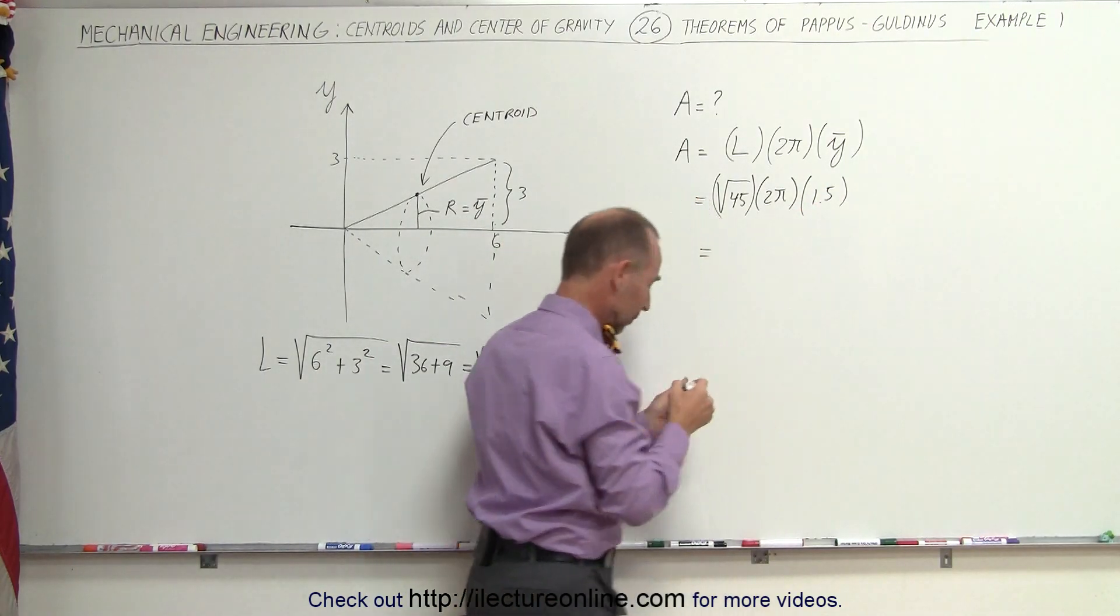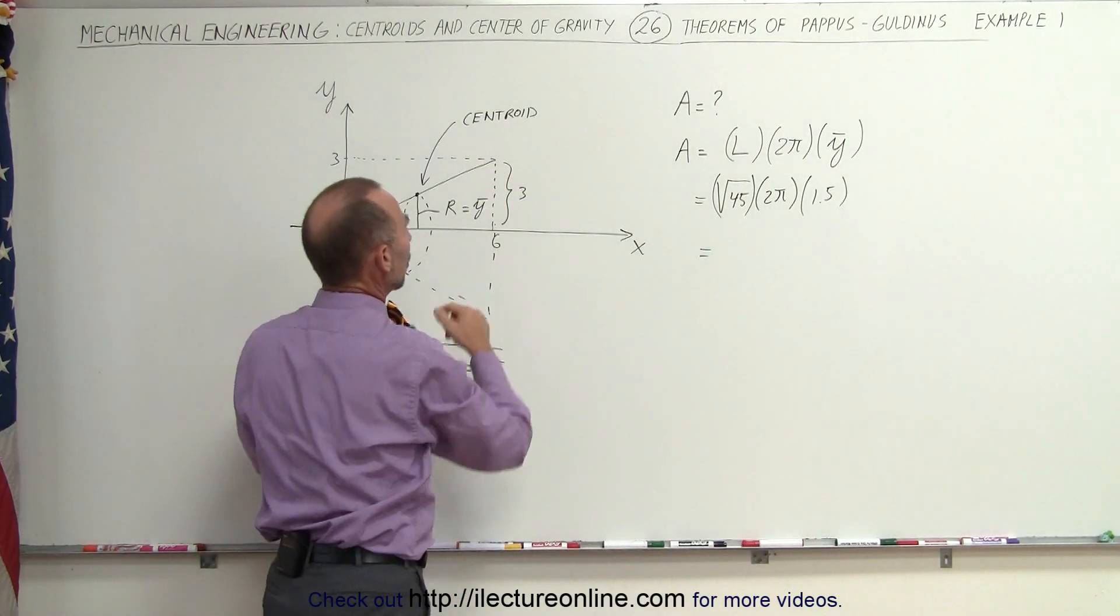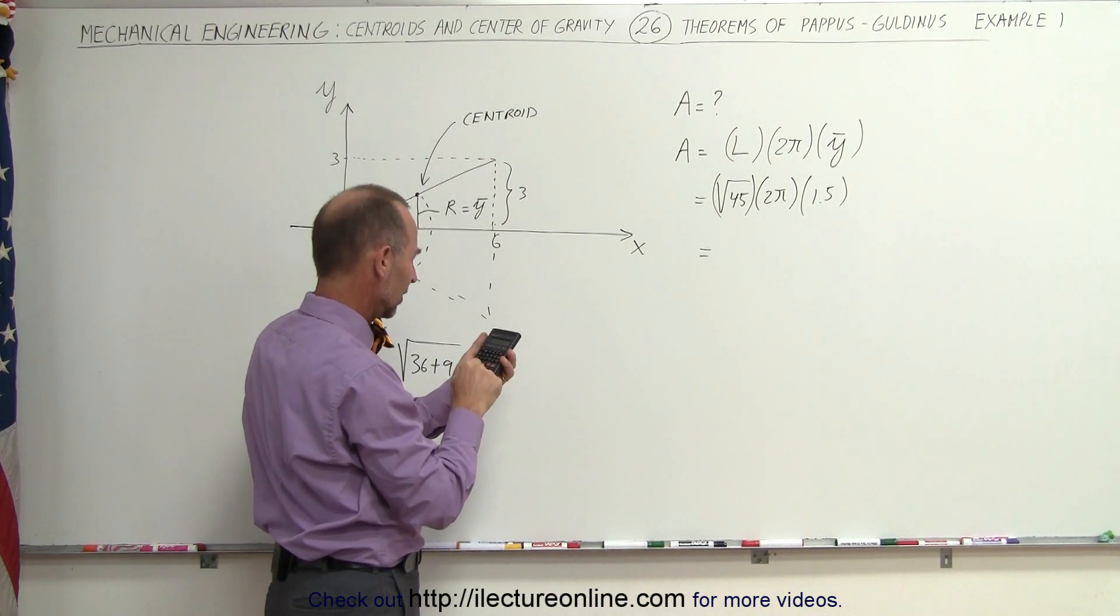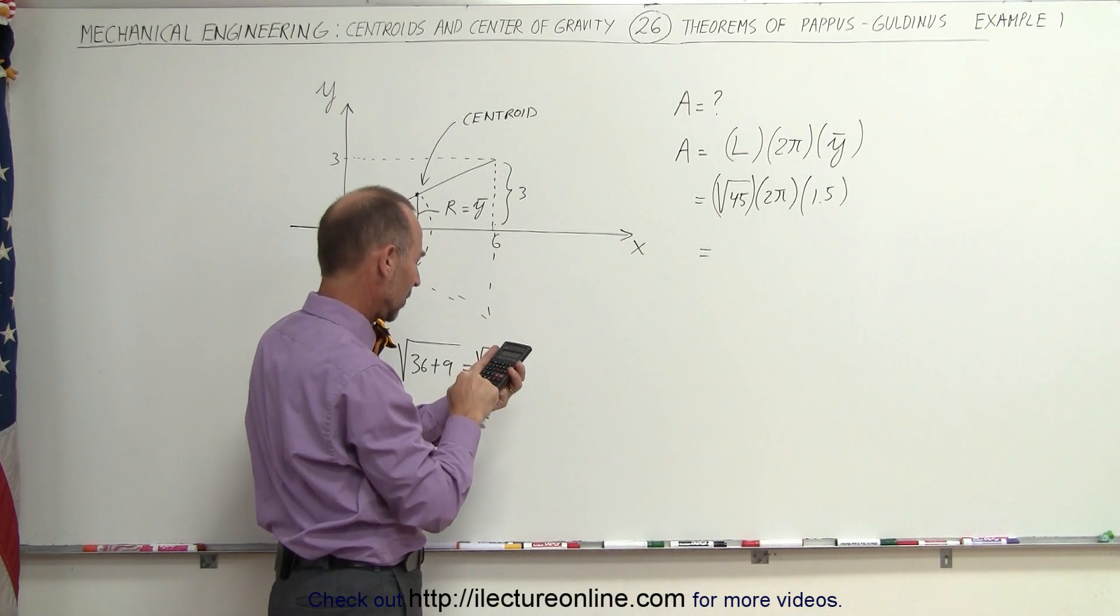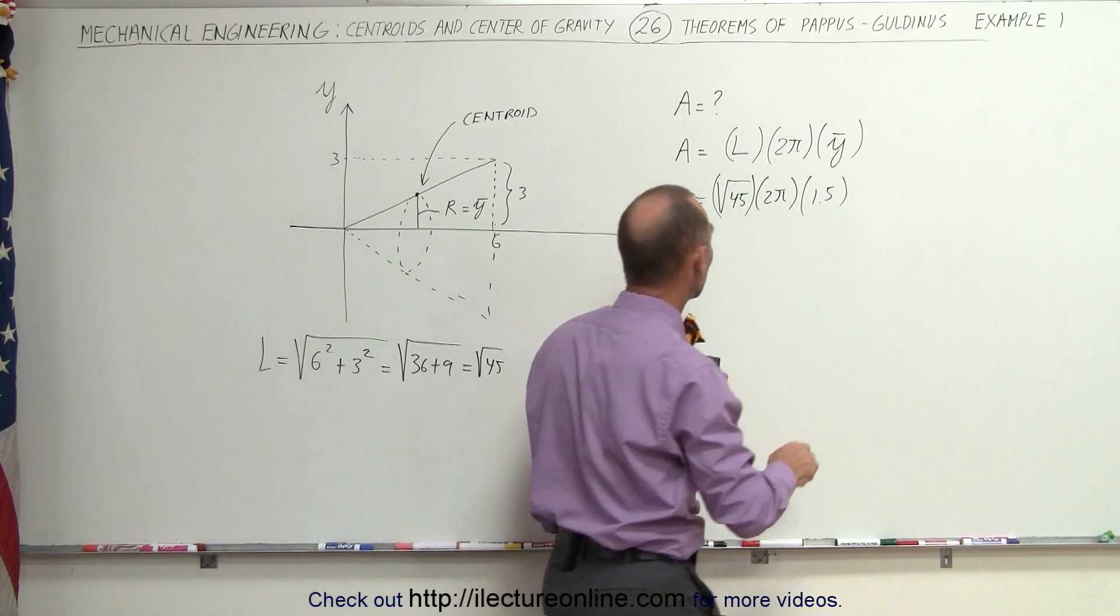And now with the calculator, we'll quickly find out what the area of that cone is. So it'd be the 45, take the square root, times 2, times π, times 1.5, and we get 63.2.